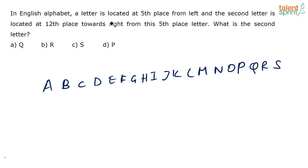So in English alphabet there is a letter located at the fifth place from the left. So which is the letter which is at the fifth place from the left? 1, 2, 3, 4, 5, E. Correct? And then the second letter is located twelfth place towards the right of the fifth place letter. So E plus 12.